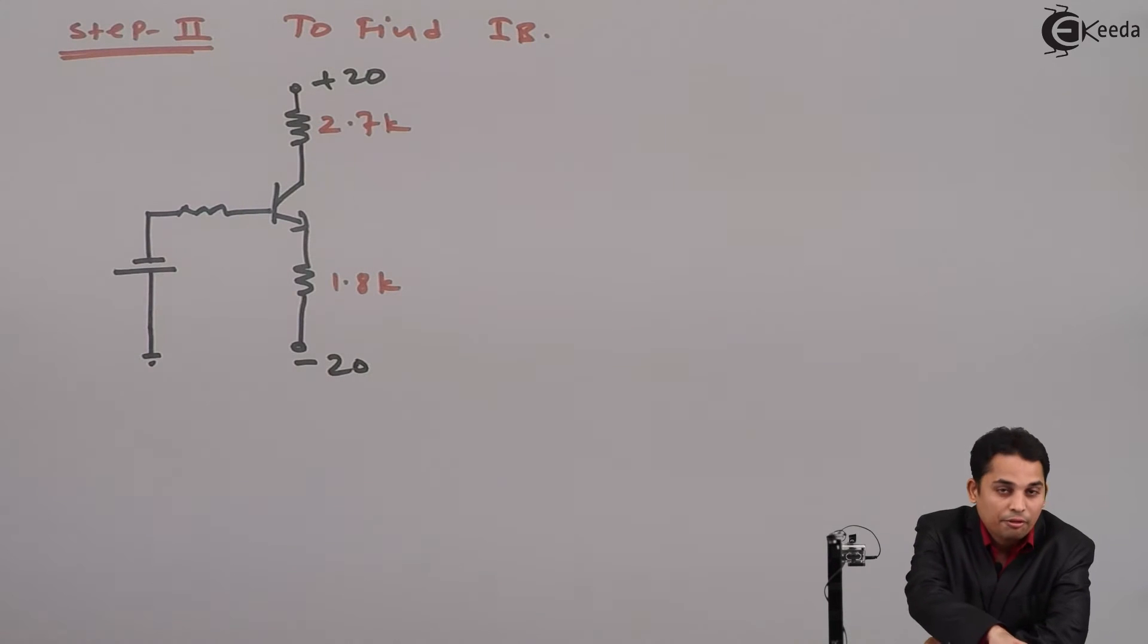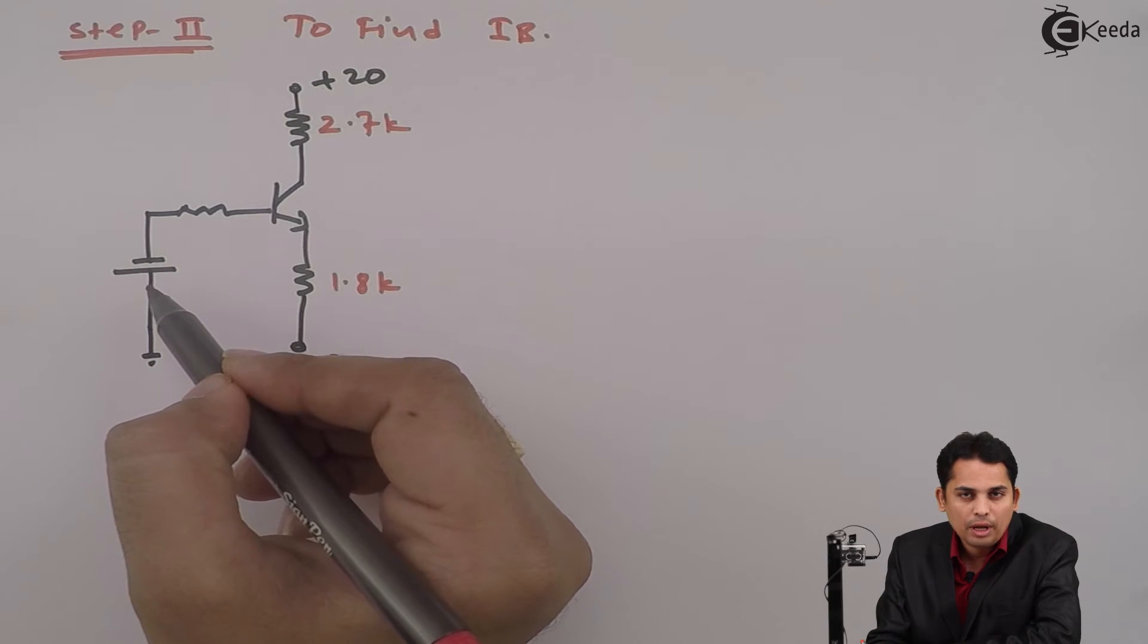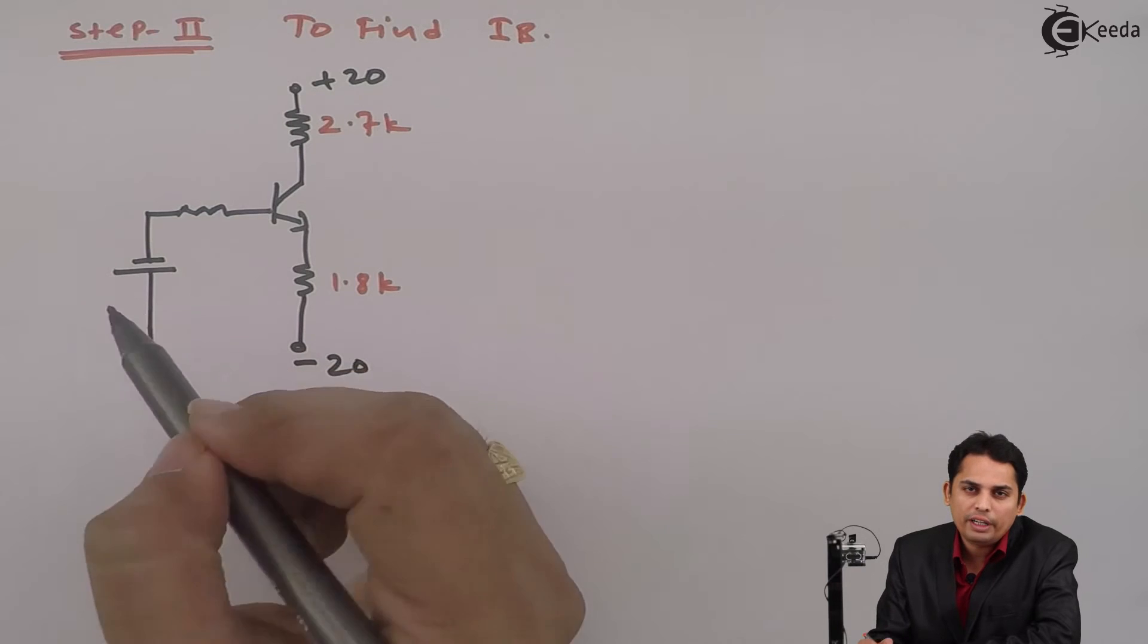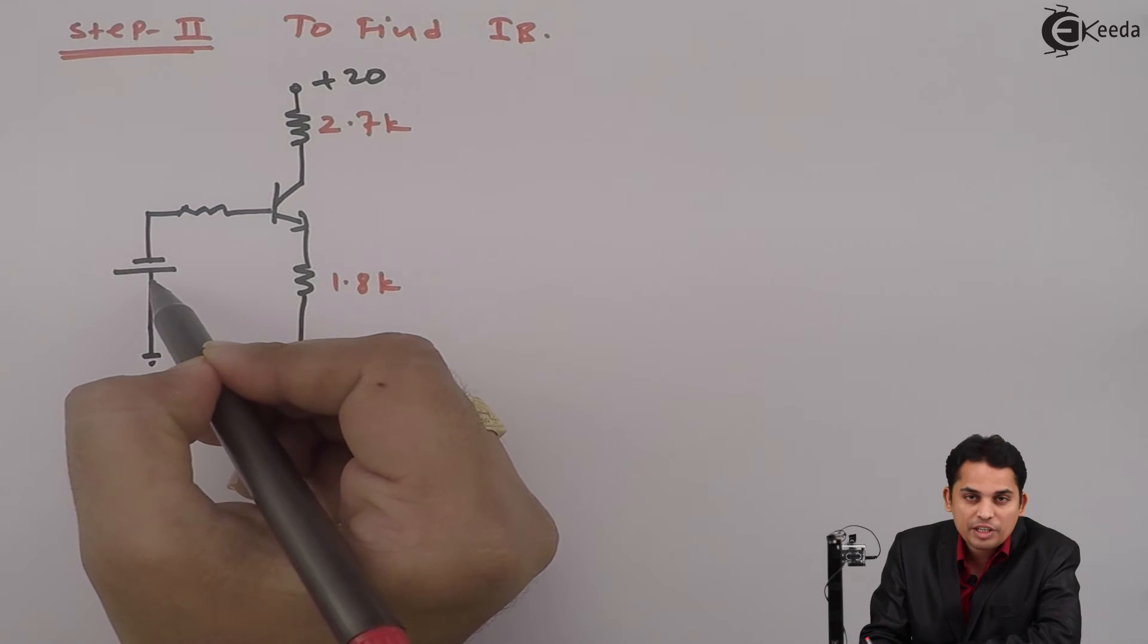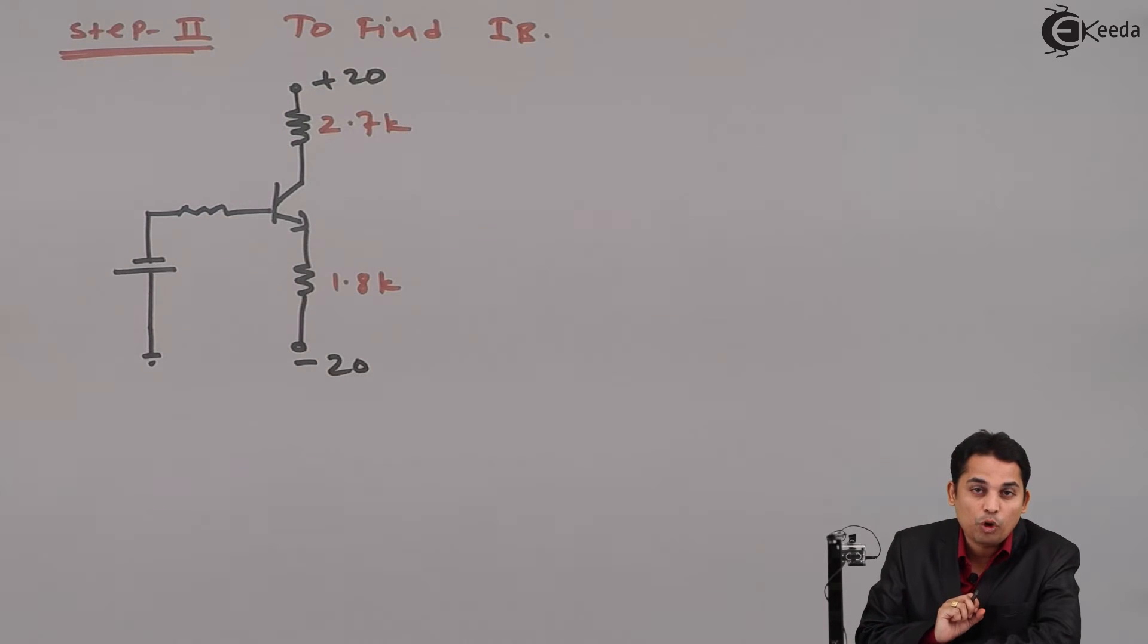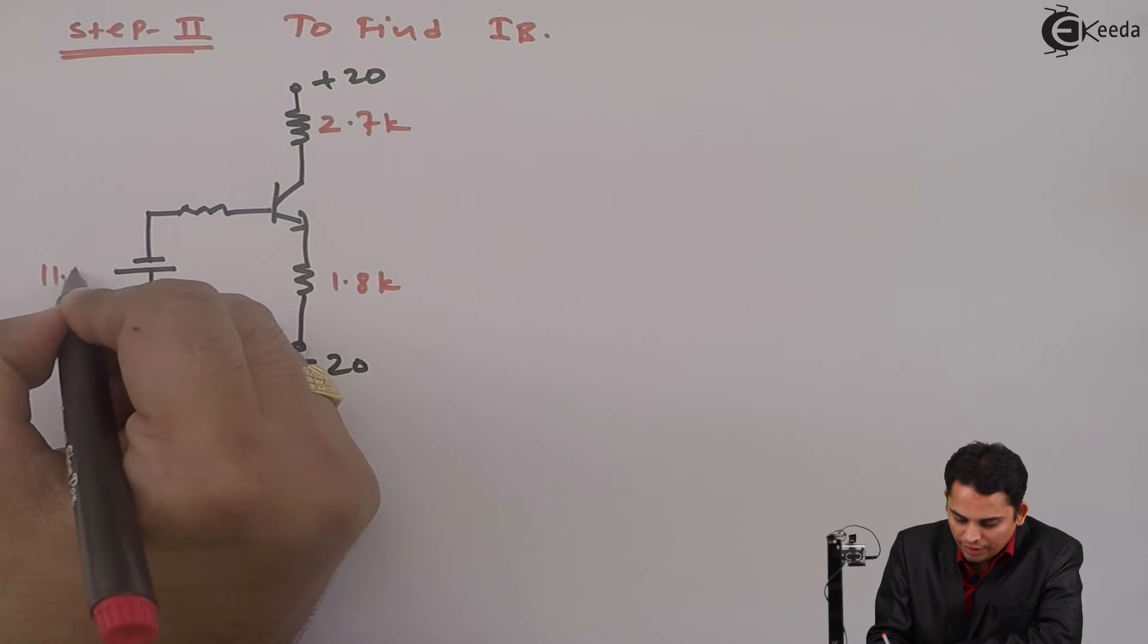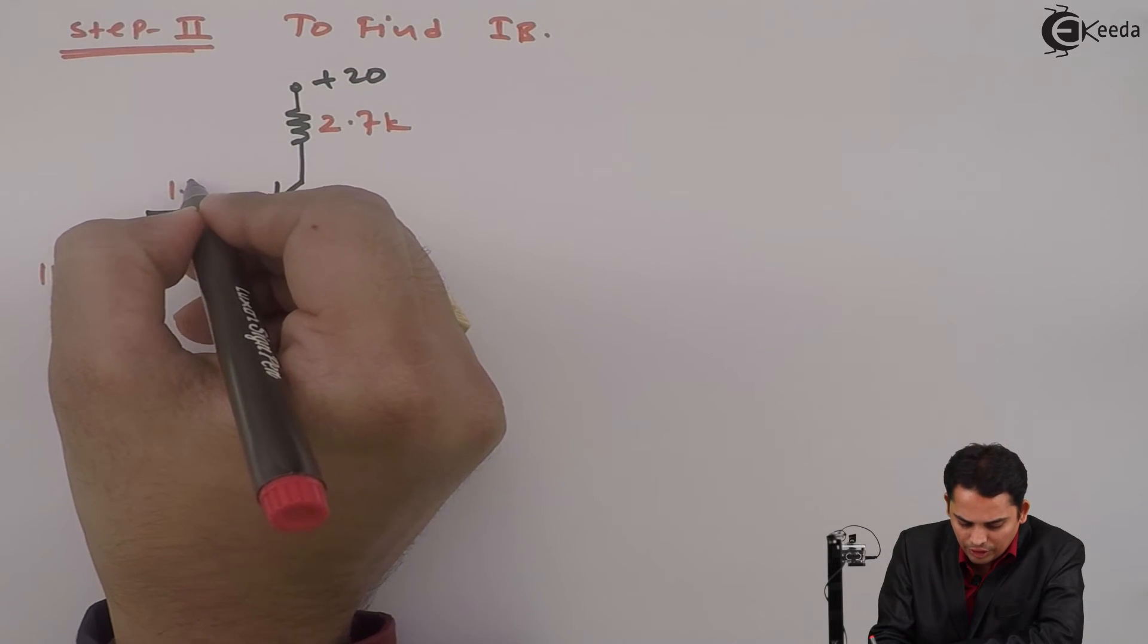Now see here very carefully. We have drawn battery like this because we have got Vth as minus 11.53. Voltage cannot be negative and hence what we need to do is just replace or interchange the polarity of the voltage source.